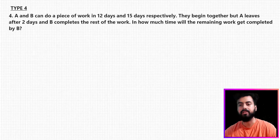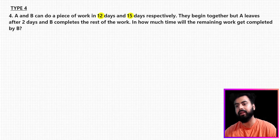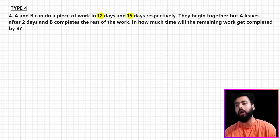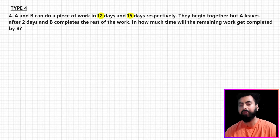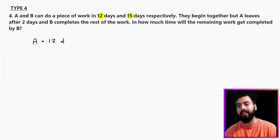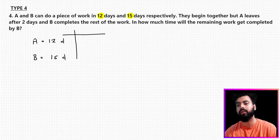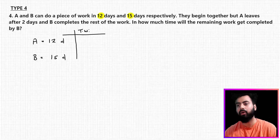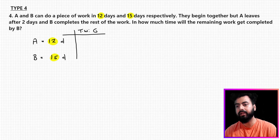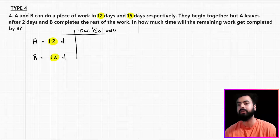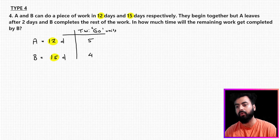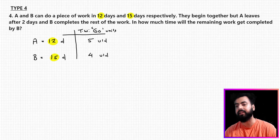Let's start with new Type 4. A and B can do a piece of work in 12 and 15 days respectively. They begin together but A leaves after two days, and then B completes the remaining work. In how much time will the remaining work get completed by B? A can do the work in 12 days, B in 15 days. We assume total work as the LCM of 12 and 15, which is 60 units. So efficiency of A is 60/12 = 5, and efficiency of B is 60/15 = 4.